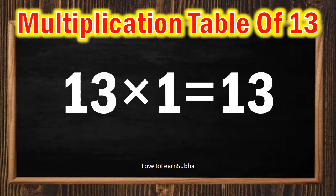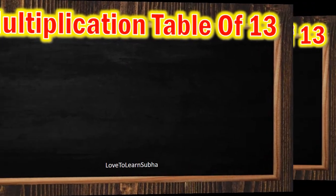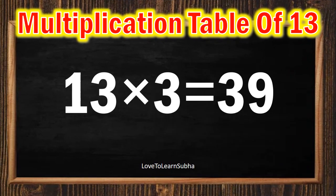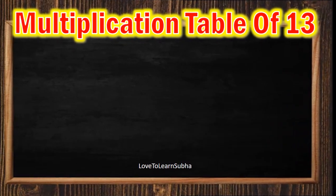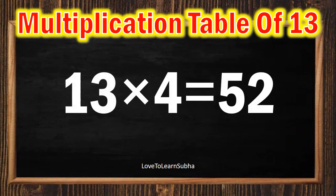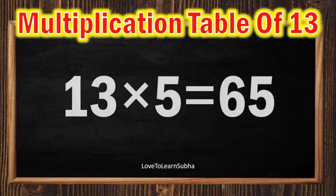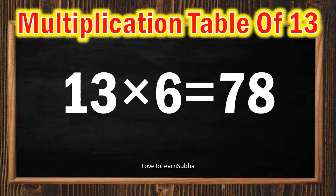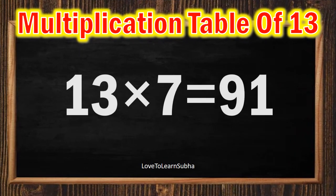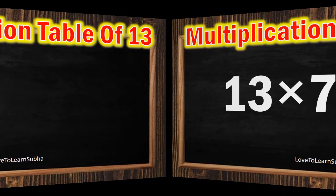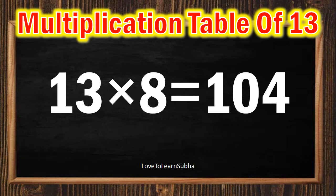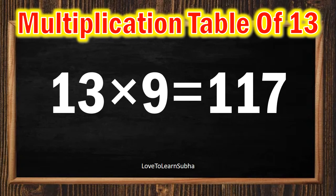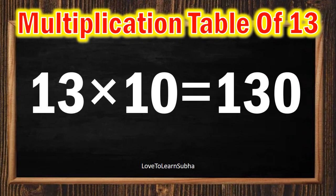13 ones are 13, 13 twos are 26, 13 threes are 39, 13 fours are 52, 13 fives are 65, 13 sixes are 78, 13 sevens are 91, 13 eights are 104, 13 nines are 117, 13 tens are 130.